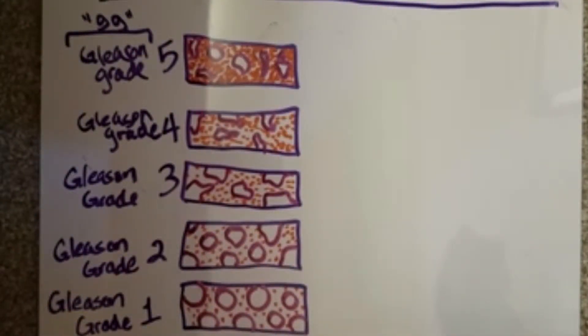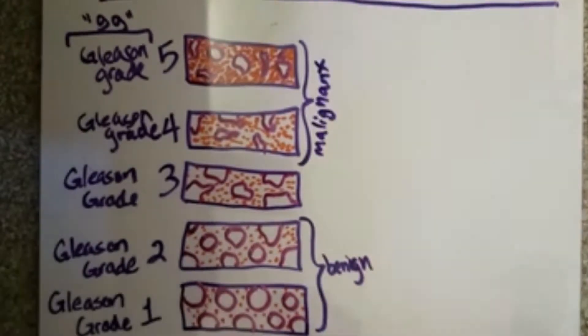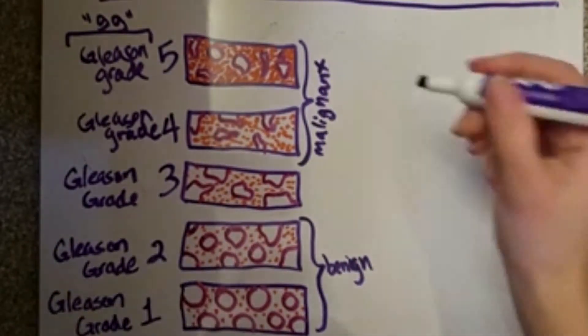Each biopsy core is given two GG's for a total Gleason score, with the first number being more prevalent.